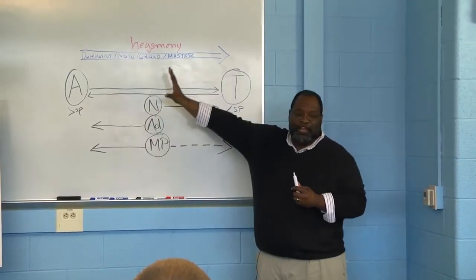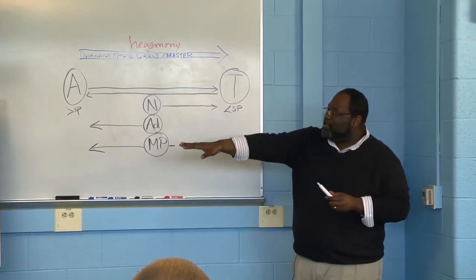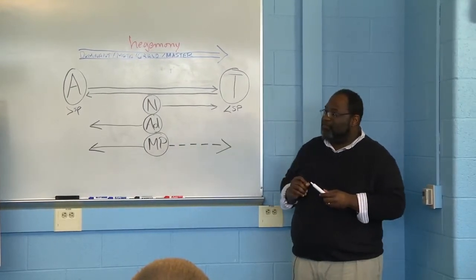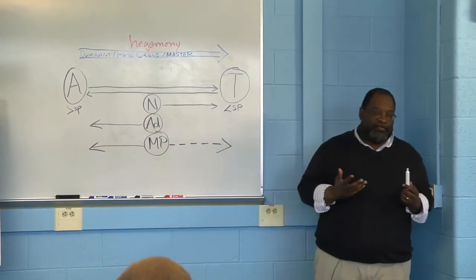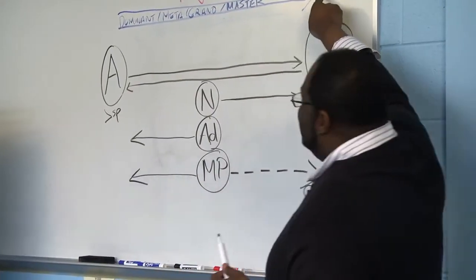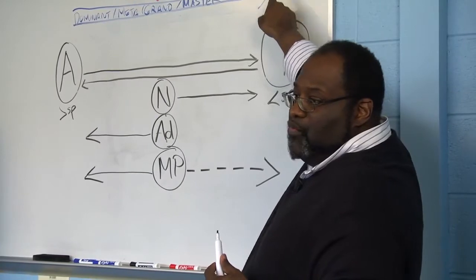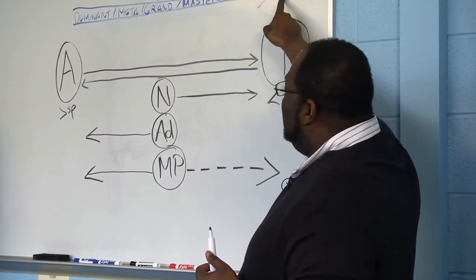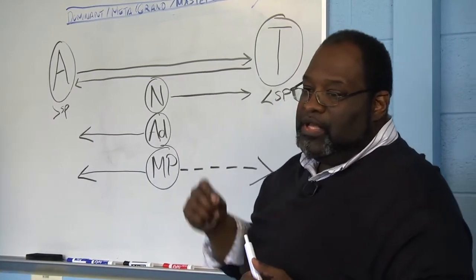The second version of a counter narrative could be the oppositional narrative. It's a narrative that says this is incorrect. It refutes that narrative and it refutes that narrative on two grounds: either moral grounds or factual grounds, and sometimes both.